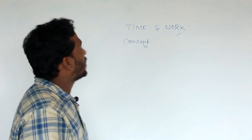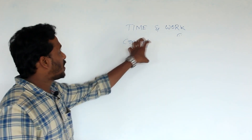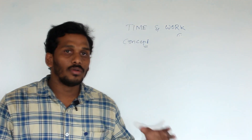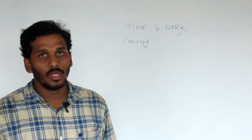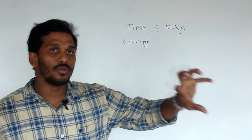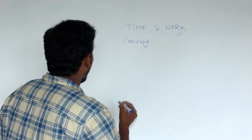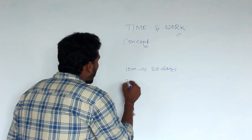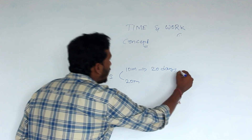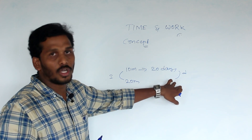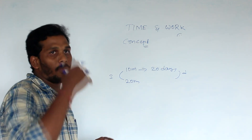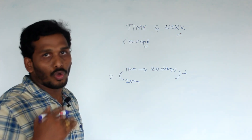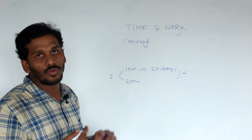Time and Work. For example, 10 members can complete work in 20 days. If the number of men increases — say from 10 to 20 members — then automatically the number of days will decrease. This is the inverse relationship between men and days: more men means less time needed to complete the same work.